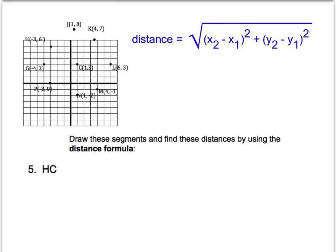When we go to the next number, five and number six, however, we see that HC is that diagonal segment right there. And so we can't count like we did on the first four. This is where we're going to use, yes, the distance formula.